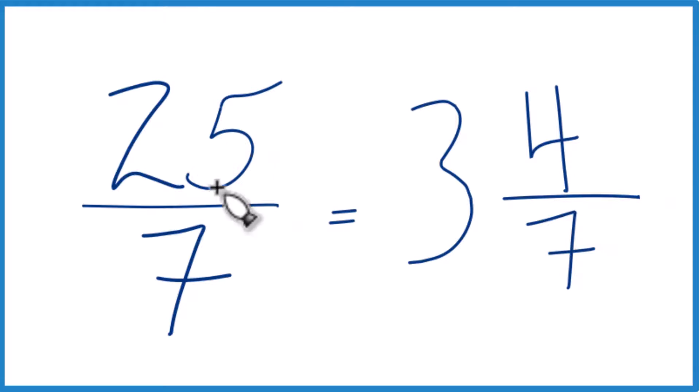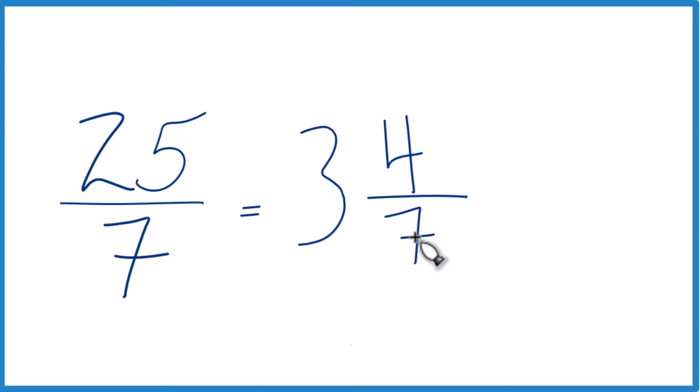And I've got it. The improper fraction 25 sevenths, that's equal to the mixed number 3 and 4 sevenths. And we can check that, because 3 times 7 is 21, 21 plus 4 that equals 25, and we keep the 7 across on the bottom. It's the same thing we started with.